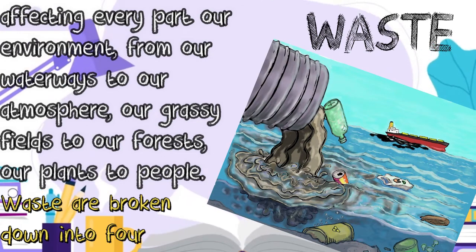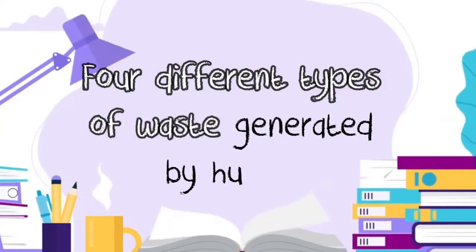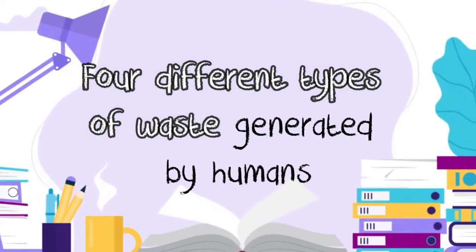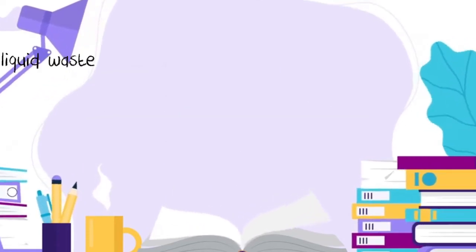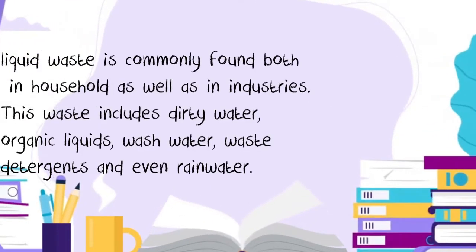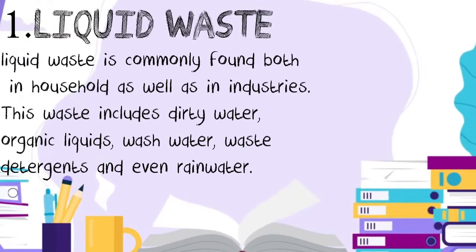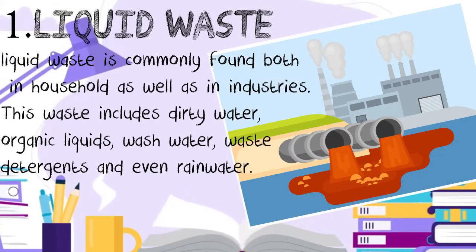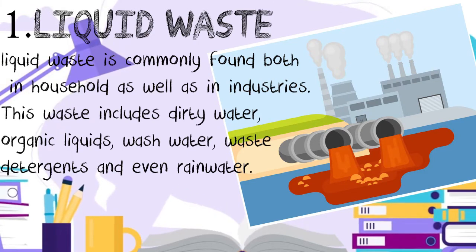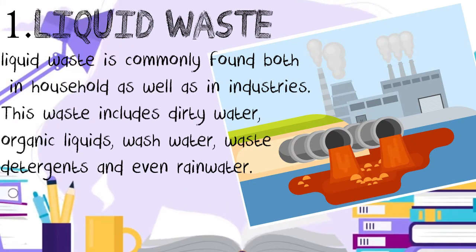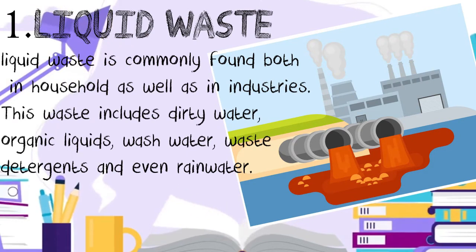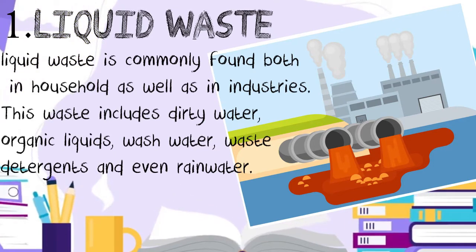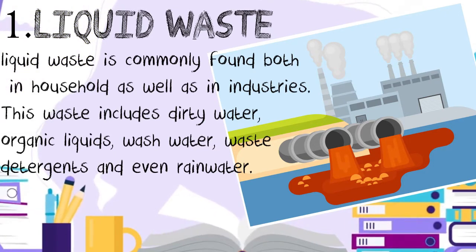Waste is broken down into four different types generated by humans. One: liquid waste. Liquid waste is commonly found both in households as well as industrial settings. This waste includes dirty water, organic liquids, wash water, waste detergents, and even rainwater.